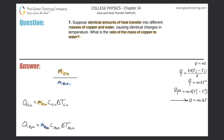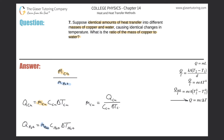All we have to do is divide out the specific heat and the temperature from both sides. That gives us the mass of copper equals the heat gained by the copper divided by the specific heat of copper times the change in temperature of copper. Same thing for water: the mass of water equals the heat gained or lost by the water divided by the specific heat of water times the change in temperature of water.